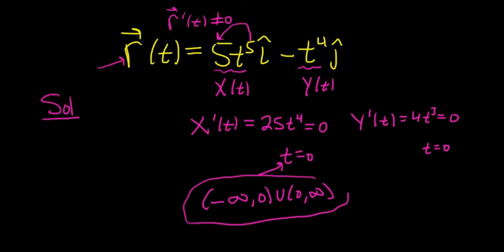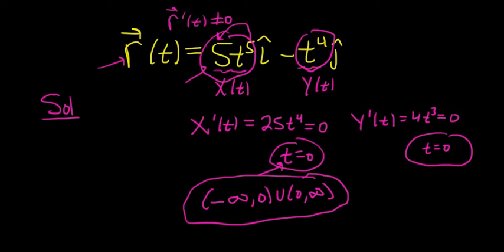So again, to find out where something is not smooth, you just take the derivative of each of these pieces, the components, and set them both equal to zero, and you solve. In this case, we got t equals zero, so it's smooth everywhere except when t equals zero.